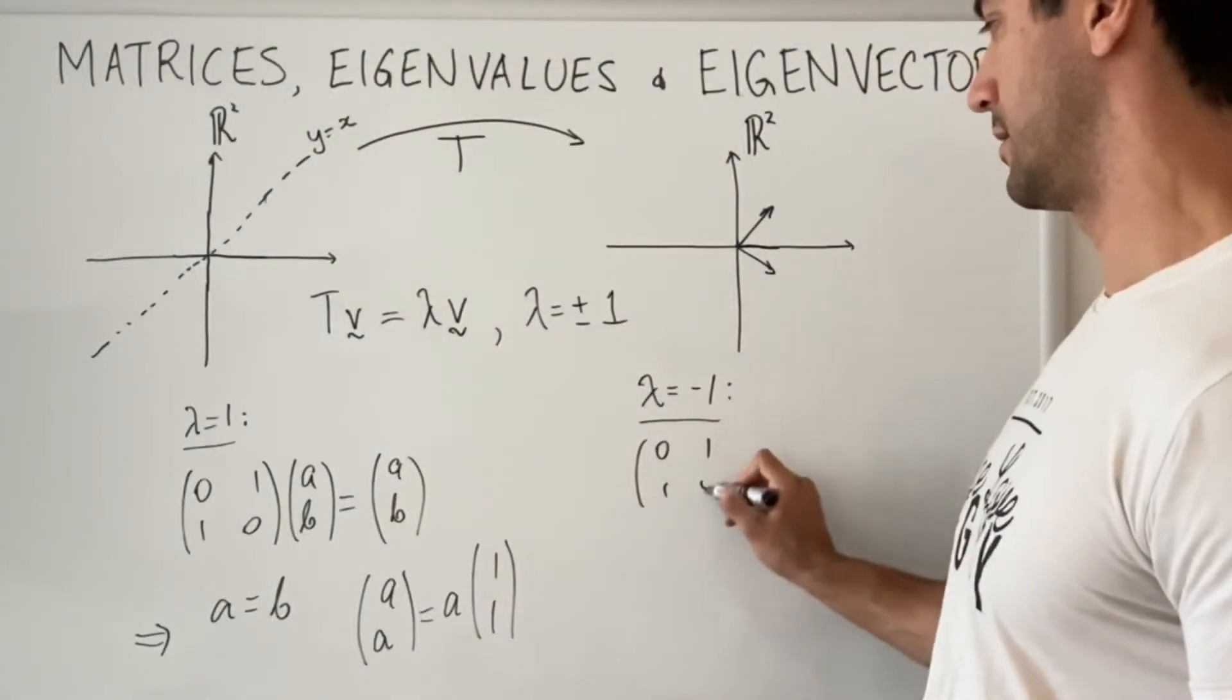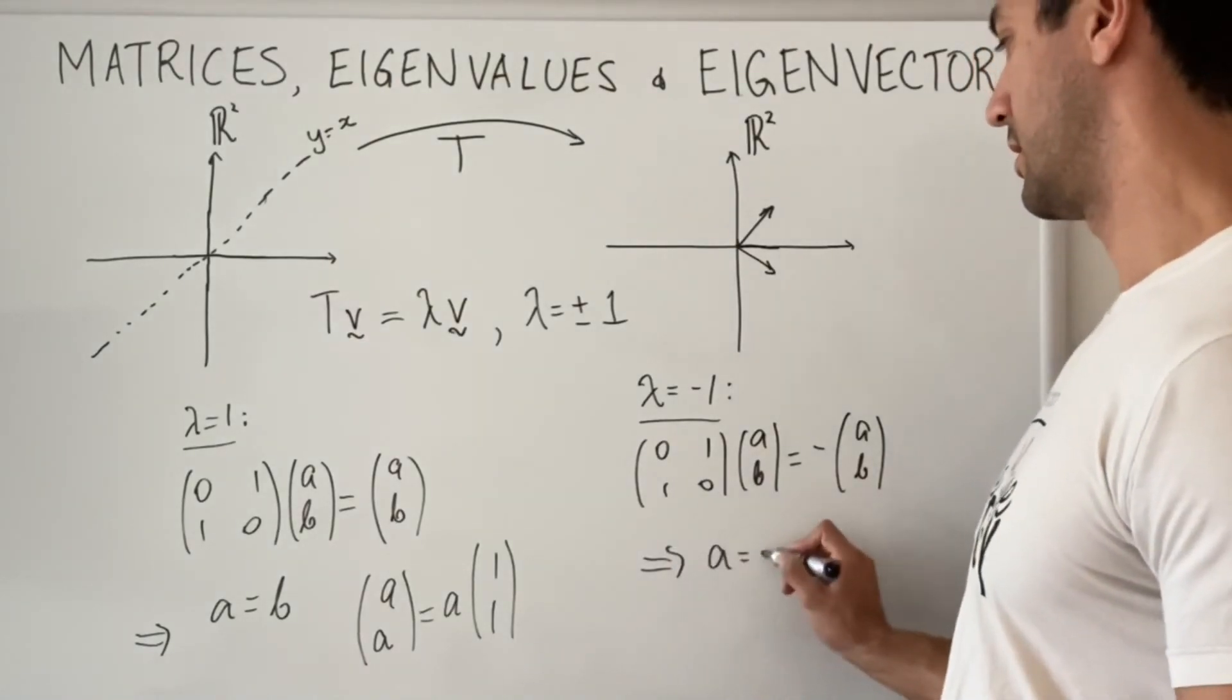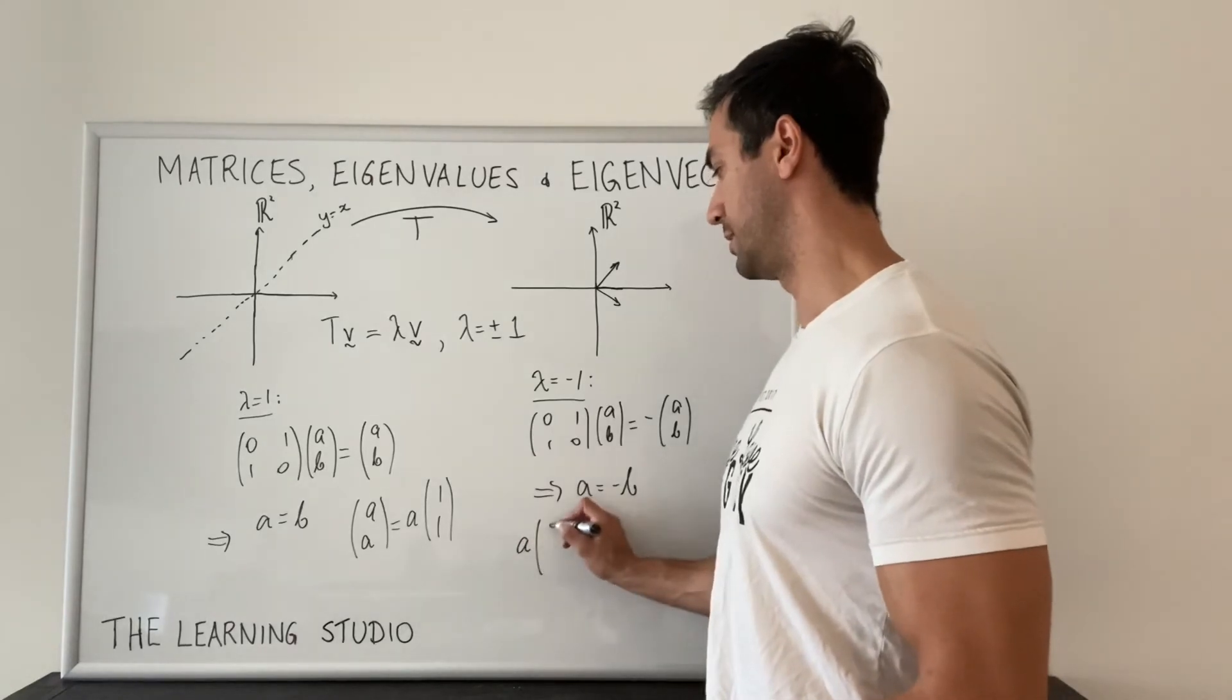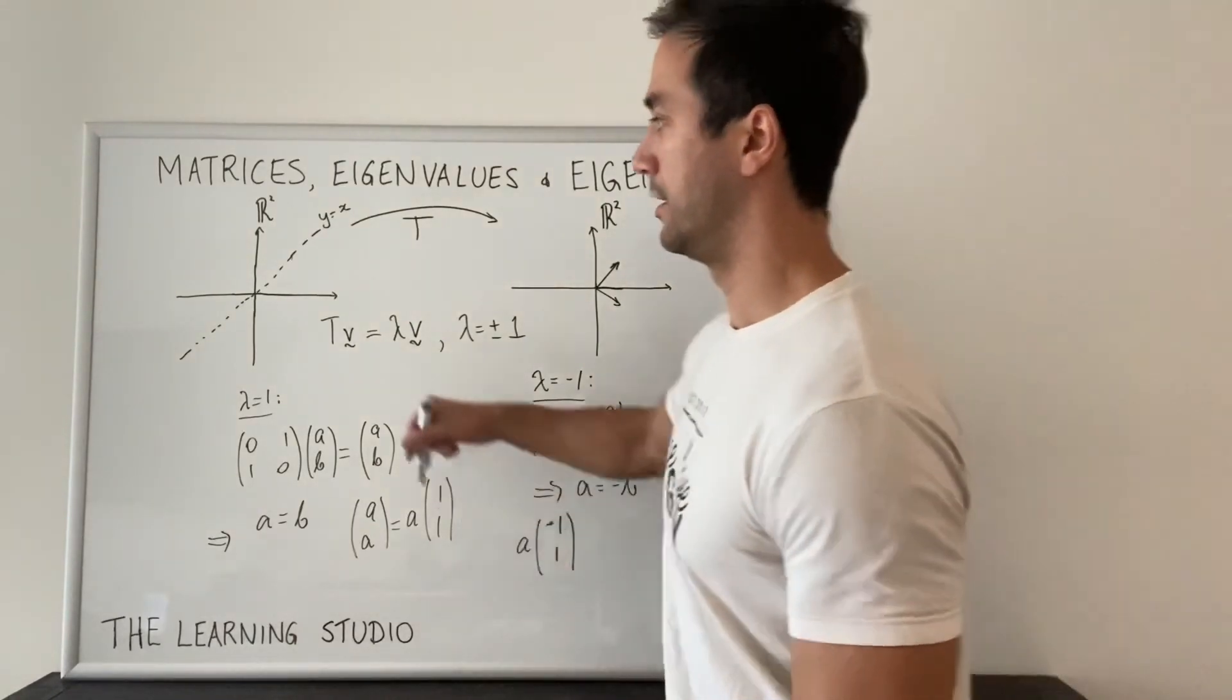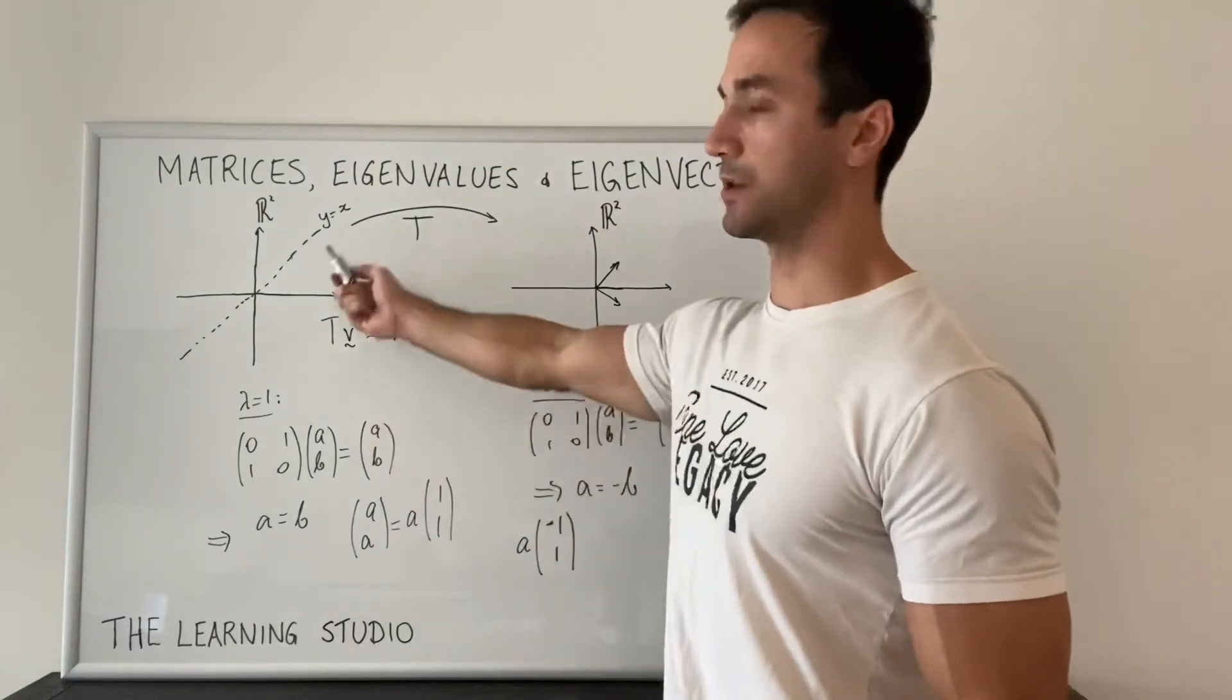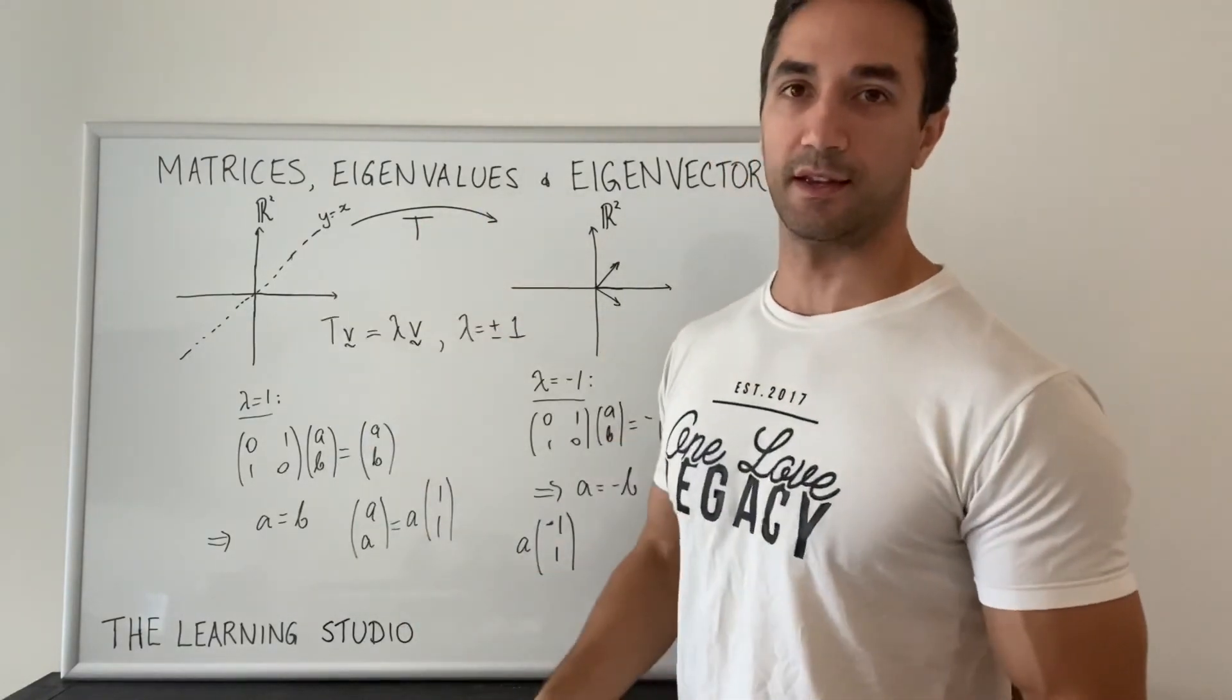So for the other eigenvalue, I do the same thing. And in this case, both equations tell me that a equals minus b. And so our vectors are of this form. And this is our second eigenvector. And that corresponds to this subspace where the vectors get completely reflected across the line. So they're the two subspaces which we already sort of knew were going to be fixed. But now we have a method for doing this regardless of the linear map, regardless of whether we can actually see it easily or not. All right, so finally, if I pick a basis consisting of eigenvectors,